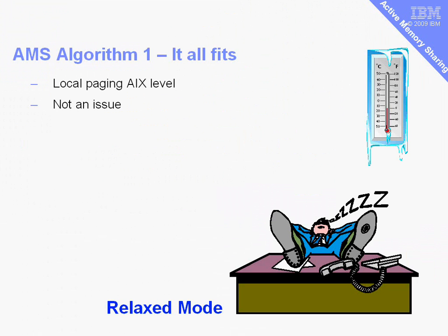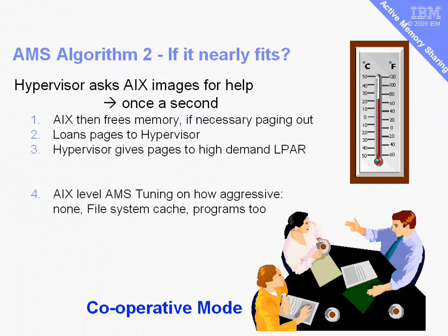The first situation is where everything fits into the pool — we don't have to do anything. AIX may do some paging to its local paging spaces, but that's not an issue; AMS is relaxed and everything is fine. If things nearly fit, the hypervisor will ask the operating systems for a bit of assistance. Once a second, AIX will check to see if the hypervisor needs some help, and if necessary it will page out some of its pages and loan those memory pages to the hypervisor. The hypervisor can then give those pages to a logical partition in higher demand for memory. Here AIX is cooperating among its peer logical partitions, and there are tuning options for how aggressively AIX will try to free up memory for its peers.